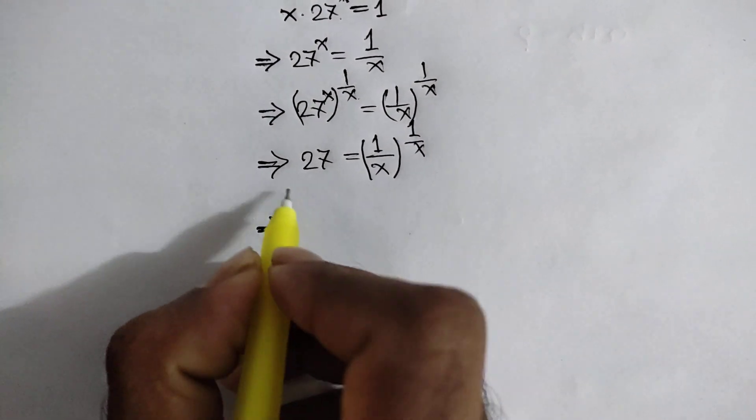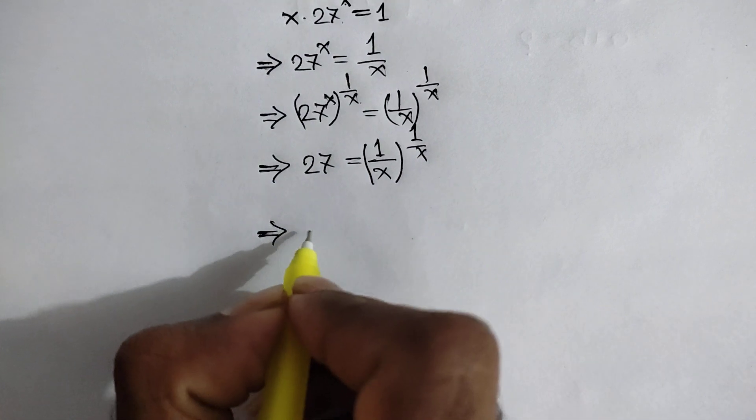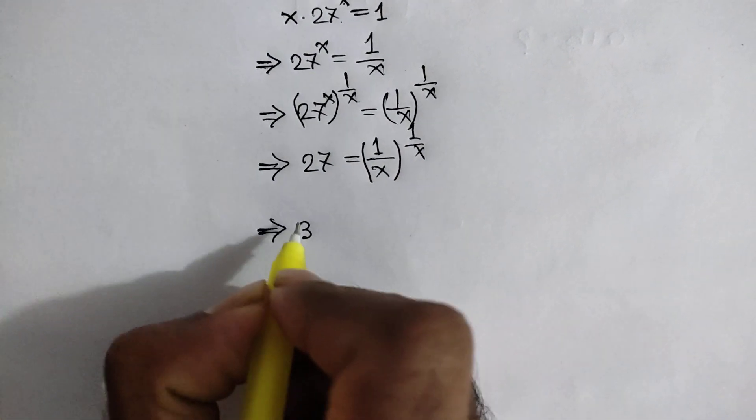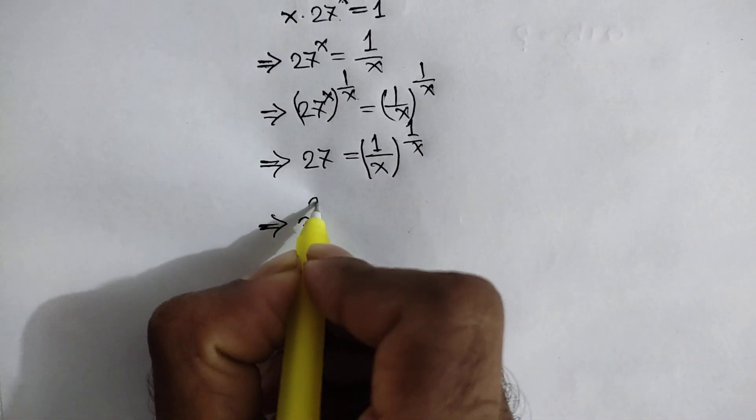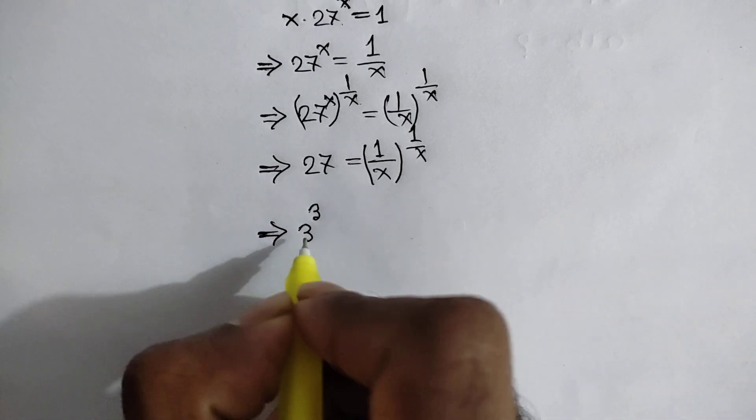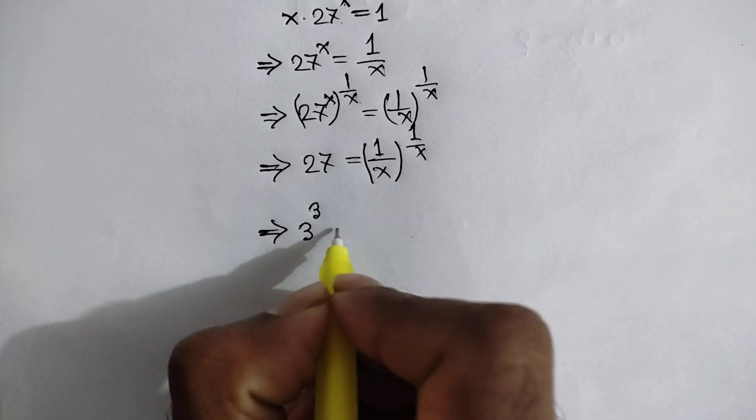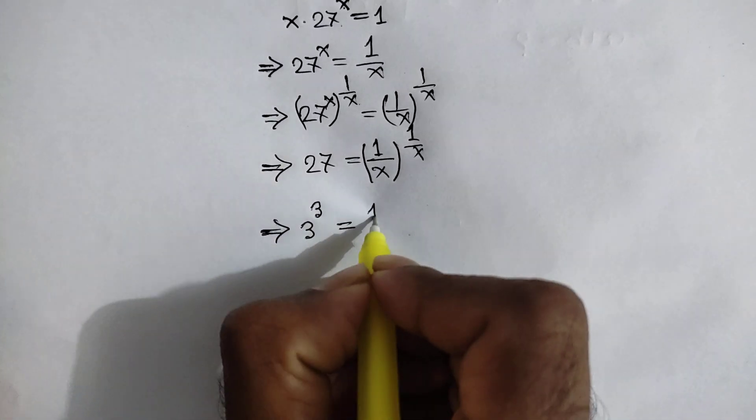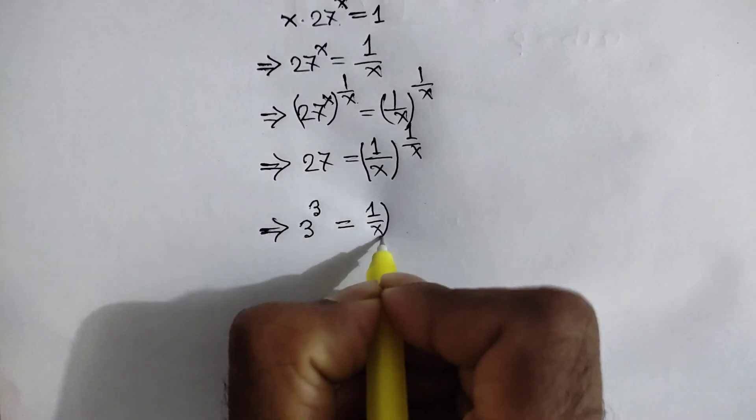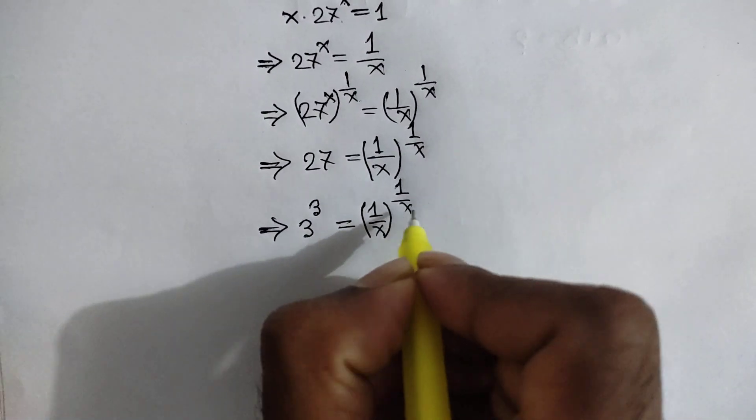27 is the same as 3 to the power of 3, so we can write 3 to the power 3 is equal to 1 over x to the power 1 over x.